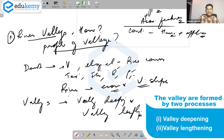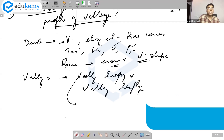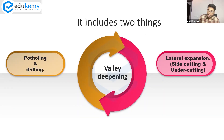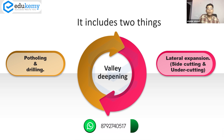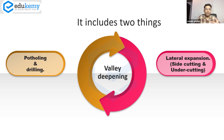Valley deepening as a process includes two things: potholing and drilling, and lateral expansion. Potholing and drilling makes the valley deeper — the river with its stones and drilling agents drills through to deepen the valley. Lateral expansion makes the valley wider, either because of erosion or undercutting.